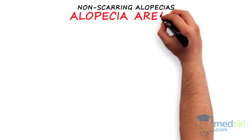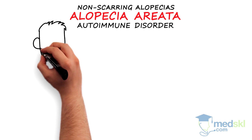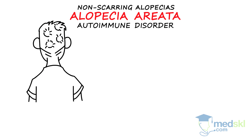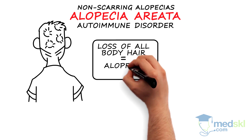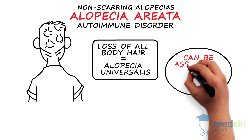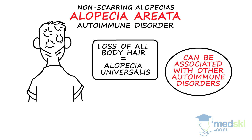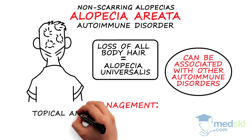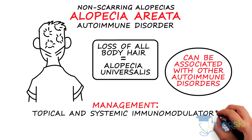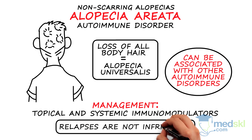Alopecia areata is an autoimmune disorder presenting with smooth bald patches of hair loss on the scalp and sometimes on other body parts. Loss of all body hair is called alopecia universalis. It can be associated with other autoimmune disorders. Management includes topical and systemic immunomodulatory agents. Relapses are not infrequent.